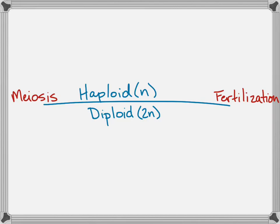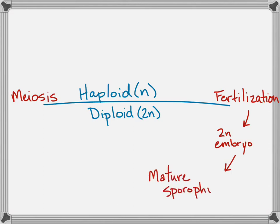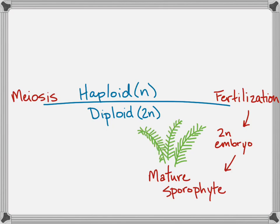Let's start with fertilization. We get this diploid embryo and it goes through mitosis to grow into a mature sporophyte. What I've drawn is a fern, because I love ferns, but there are lots of mosses and algaes that go through this kind of life cycle as well and have a sporophyte form. In this case, the really big plant that we know as a fern is the diploid sporophyte, and that sporophyte produces spores — that's why it's called a sporophyte.